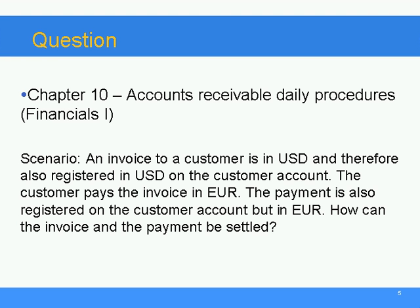Now you see the question from the last covered chapter, Chapter 10 Financials 1. Here is the scenario: an invoice to a customer is in USD and is also registered in USD on the customer account. The customer pays the invoice in euro, and the payment is also registered on the customer account but in euro. How can the invoice and the payment be settled?